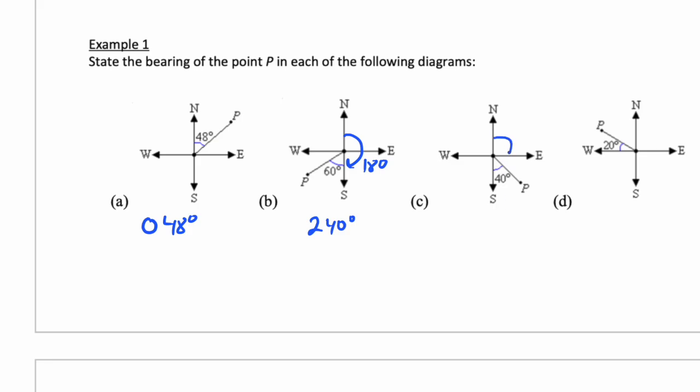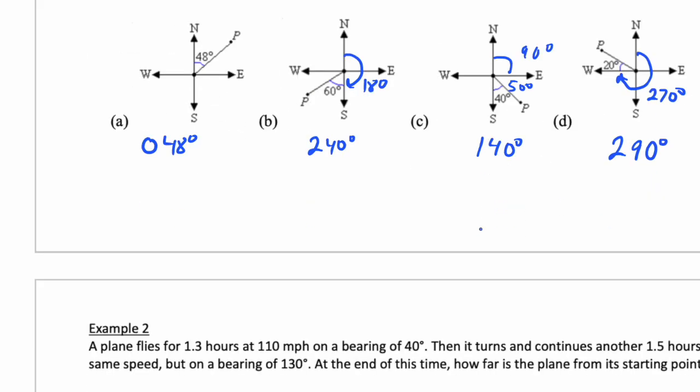This is a bearing of - we do 90 here, 90 plus 50 because these two add up to 90. So the whole total is a bearing of 140. Here we go all the way 270 and beyond another 20, so the bearing is 290. That's how bearings basically work.